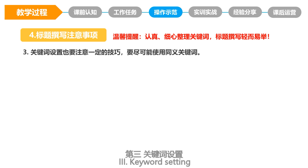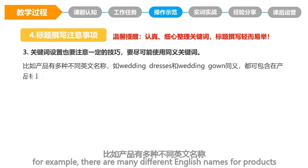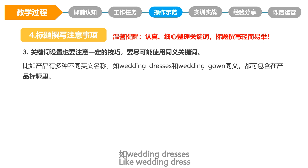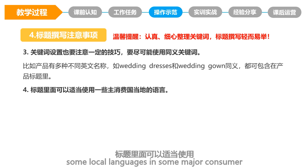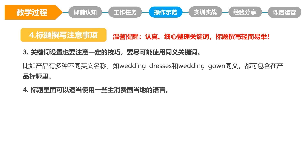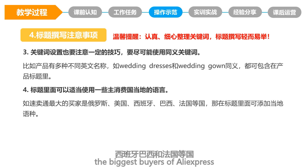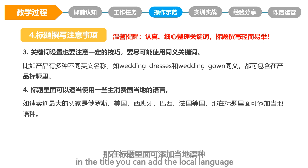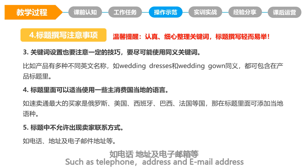Third, keyword setting should also pay attention to certain skills. Use synonymous keywords as much as possible. For example, there are many different English names for products — like 'wedding dress' is synonymous with 'wedding gown.' You can add them in the title. Some local languages of major consumer countries can be used properly in titles, such as Russia, America, Spain, Brazil, and France — the biggest buyers of AliExpress. The seller's contact details should not be included in the title, such as telephone, address, and email address.